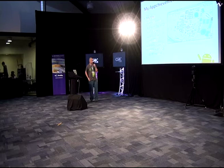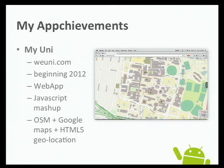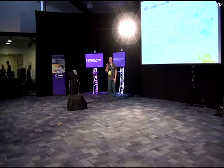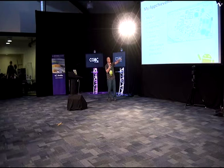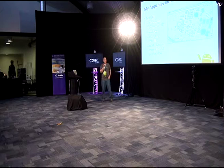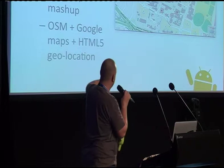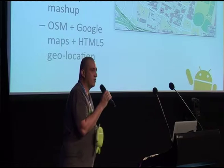I'll start with a bit about myself. I've written a few Android apps. When I started at Monash in 2010, I thought I can't walk around with a crappy PDF map — it's too big and bloated. So I'll write a web app. I wrote this web app called MyUni on www.weuni.com. It was like a mashup using JavaScript, OpenStreetMaps, Google Maps, and HTML5 geolocation. I thought that's pretty cool, but I can't really walk around with a laptop.